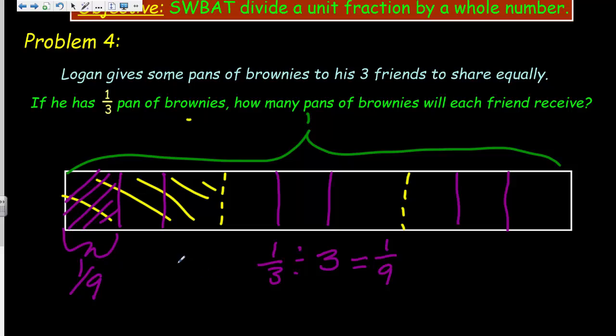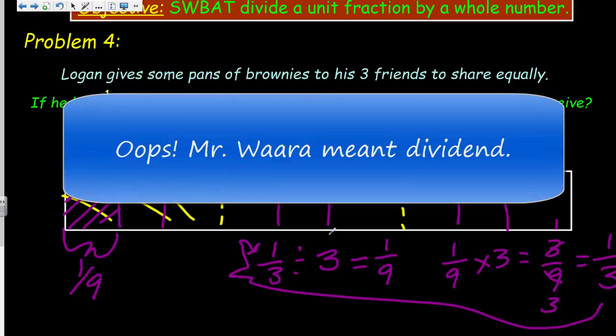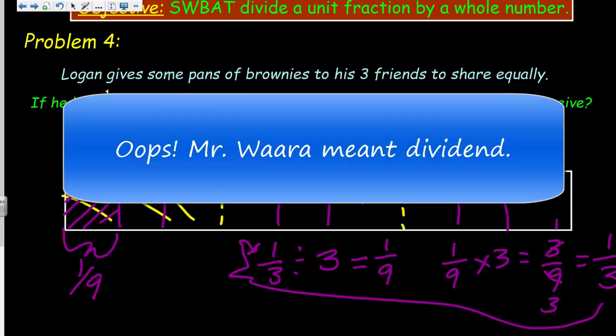Now, we can check our work like we did before by showing, well, if that's the quotient, I can take that quotient multiplied by the divisor. Right. And now I end up with three over nine, which we can reduce by dividing out a common factor of three. OK, leaving that one and that three, that would make that one third. And yes, it comes right back to our divisor. I'm telling you, this stuff is just easy.